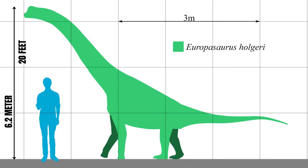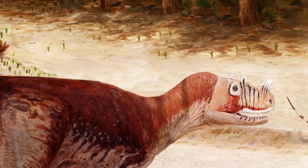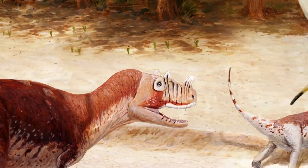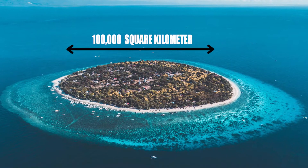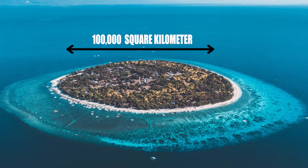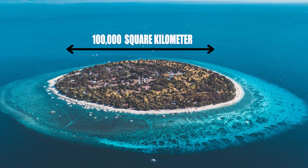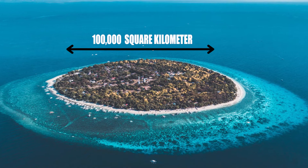In fact, it was a very small sauropod, measuring only 6.2 meters or 20 feet as an adult. The habitat of Europosaurus was a subtropical island in the Tethys Sea 150 million years ago. It was about 100,000 square kilometers in size and the climate was warm and humid.